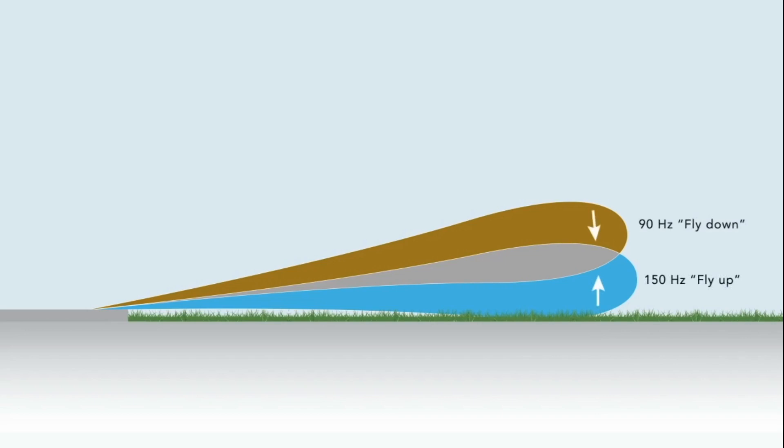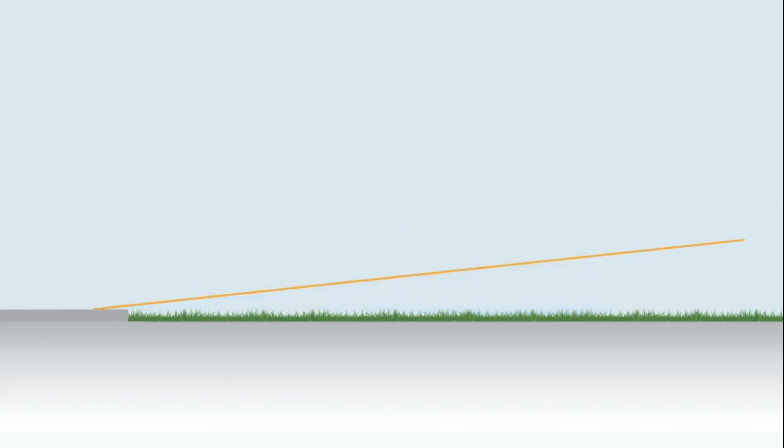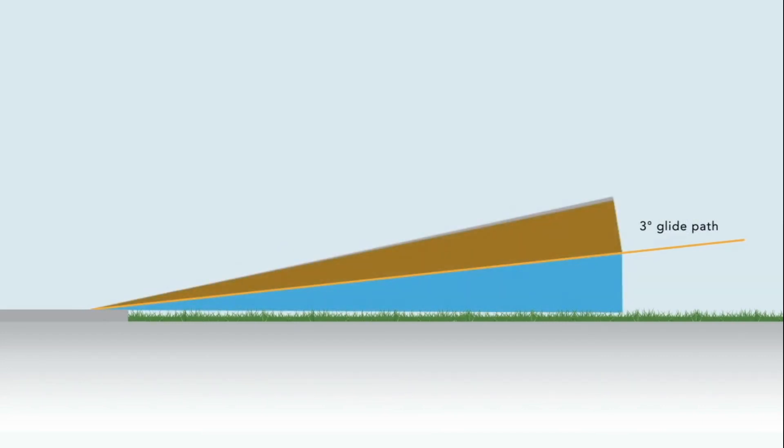The ILS glide slope antennas transmit two radio signals: a 150 Hz fly up signal and a 90 Hz fly down signal. When both signals are equal, the aircraft is on the glide path to the runway. The angle of the glide slope is usually 3 degrees. The investigation at Eindhoven airport revealed that the ILS antenna has a reversed false glide path signal at 9 degrees.